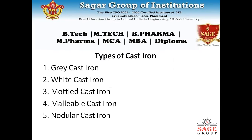Cast iron has five types: grey cast iron, white cast iron, mottled cast iron, malleable cast iron, and nodular cast iron. They have different percentages of carbon and different percentages of other alloying elements in the cast iron.